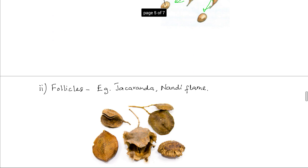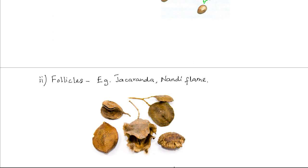Follicles are other examples of dehiscent fruits. A follicle is formed from one carpel and it splits along only one edge, like the follicle of the jacaranda. This one edge splits, releasing the seeds from within.